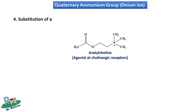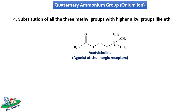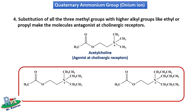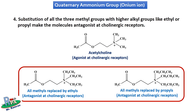The fourth point is that substitution of all three methyl groups with higher alkyl groups like ethyl or propyl makes the molecule an antagonist at cholinergic receptors. Acetylcholine is an agonist at cholinergic receptors, but if you replace all the methyl groups with ethyl, propyl, or higher alkyl groups, these molecules act as antagonists at the cholinergic receptors.